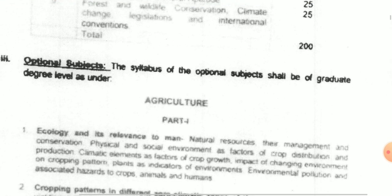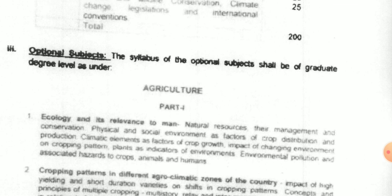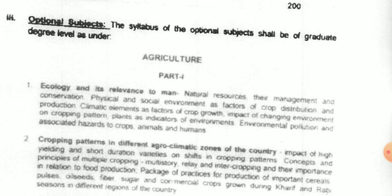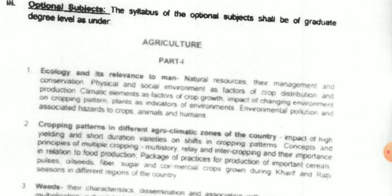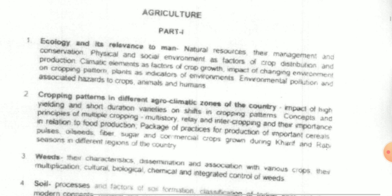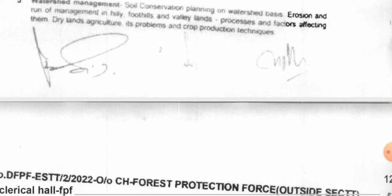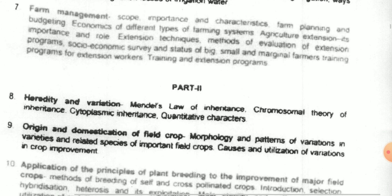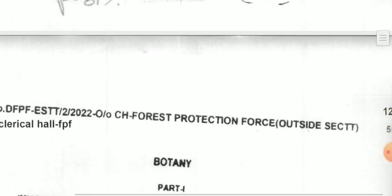After that, you have to read an optional paper and its syllabus is given here. You can see the first subject is Agriculture. You can see two papers — Paper 1 with Part 1 and Part 2.